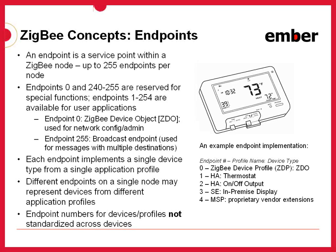Endpoint 0 is currently reserved for network configuration and administration, and is generally used by the stack for gaining information about other devices, though applications could use endpoint 0 to learn about devices themselves. Endpoint 255 is used as a generic broadcast endpoint — so if you want to send a message and you're not sure which endpoint to send it to, endpoint 255 can be used to distribute it to all endpoints on a destination.